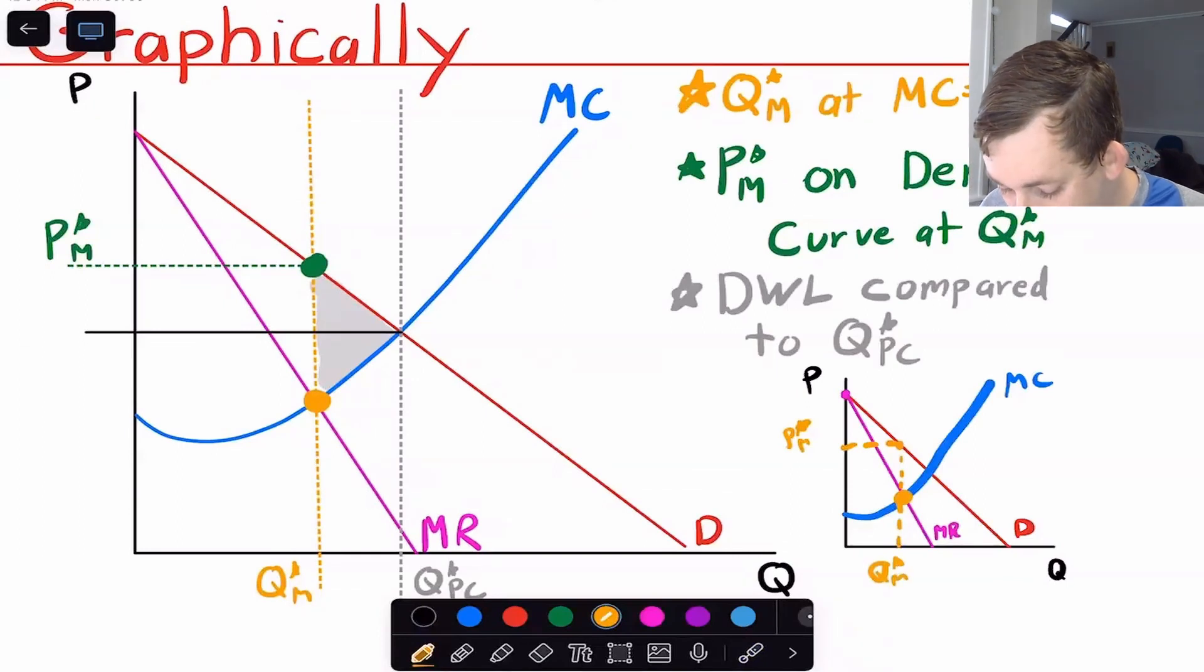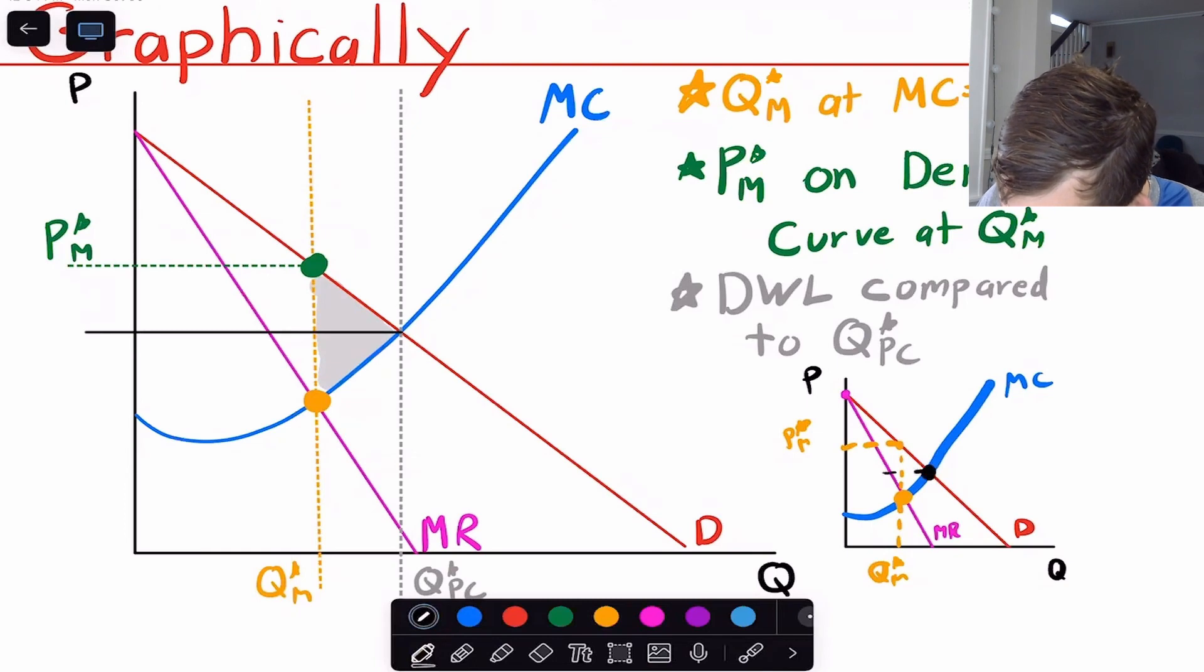If I wanted to find the optimal quantity and price in a perfect competition market, I would find again where marginal cost is equal to demand instead of marginal revenue. So that's going to be this point right here. And then I would once again go over to the y-axis to find the price in a perfect competition. And I would go straight down to find the quantity in a perfect competition. So you can see that compared to perfect competition, a monopoly has lower quantity and a higher price.